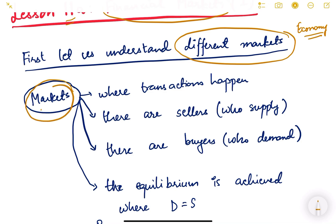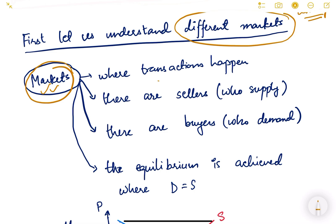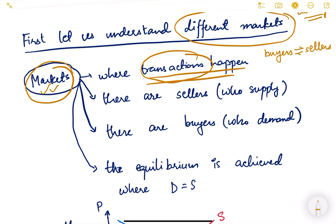Before understanding different markets, let us understand the meaning of 'market' itself. Many of you must already know what markets are. In layman's terms, a market is where we go and buy things — groceries, books, etc. But in economics, there is a very specific meaning: a market is a place where transactions happen. Somebody is buying something and somebody is selling something. It can be offline or online.